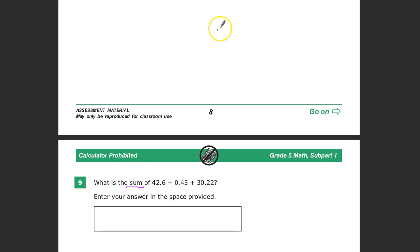So when I do my 42.6, I'm going to go ahead and put some decimal points in and then work around them. My next one is 0.45, and then 30.22.